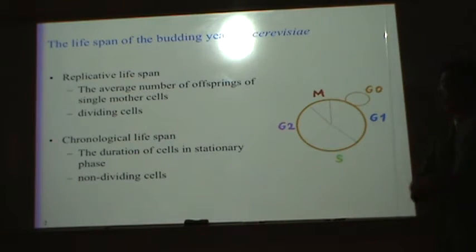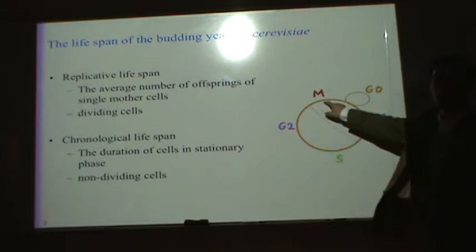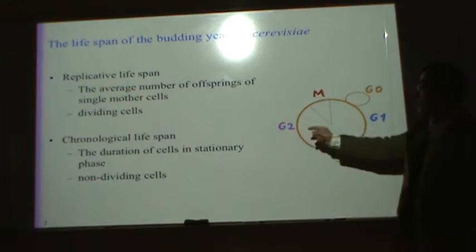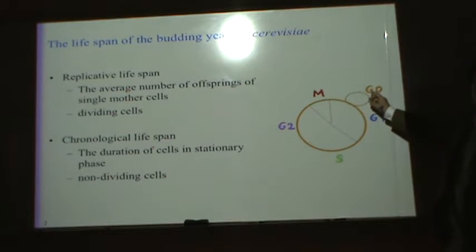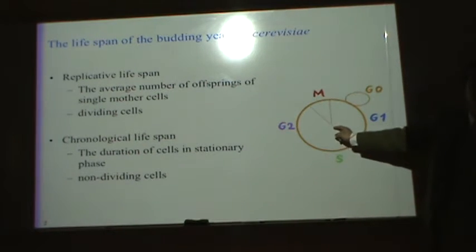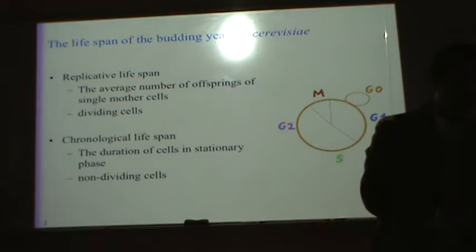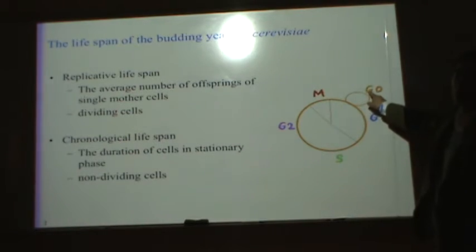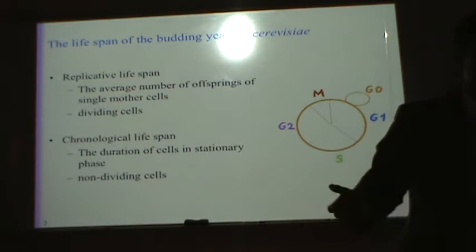Making sense? Mm-hmm. So one is about how many times it can go through cell cycle. That's this one, RLS. The other one is just to say, can cell still maintain its viability in the G zero phase? Basically, say, how long it can stay at G zero and still goes back to cell cycle? What it implies is if cells permanently stay at G zero, that is a dead cell. If cell never divides.